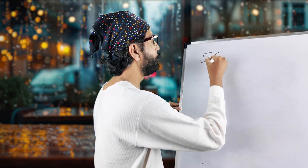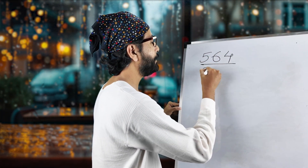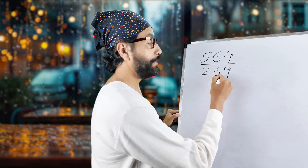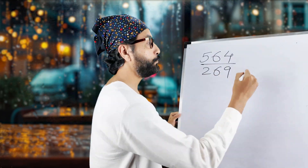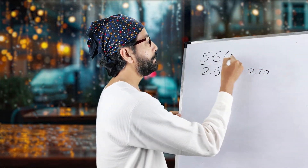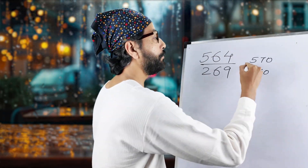564 divided by 269. What do we do initially? We just round it up. 269 is close to 270, right? Simple. So 564 becomes 570. Now we're not going to solve it directly — we are going to get the ratio, that's it.